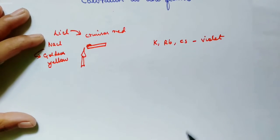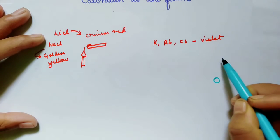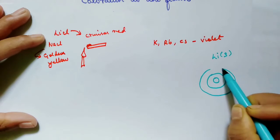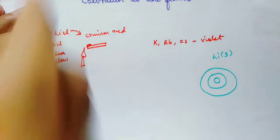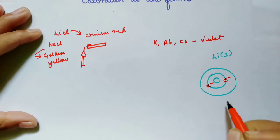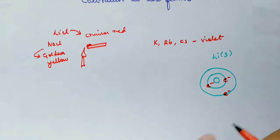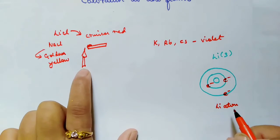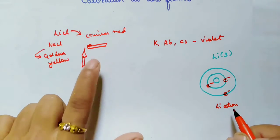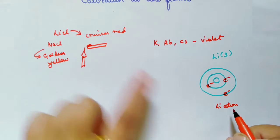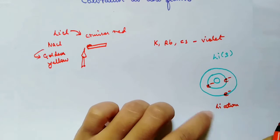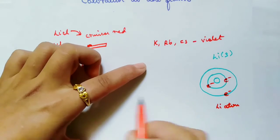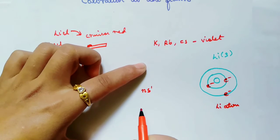Suppose we have a lithium atom. This is the nucleus; the atomic number of lithium is three. We have the first shell with two electrons and the second shell with one electron, which is the valence electron. Now when a salt of lithium is burned in a Bunsen flame it gives out crimson red color, and I will be explaining this by considering this lithium atom.